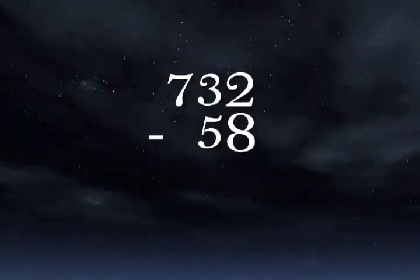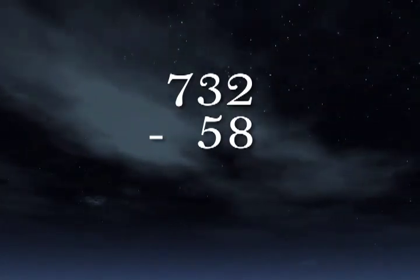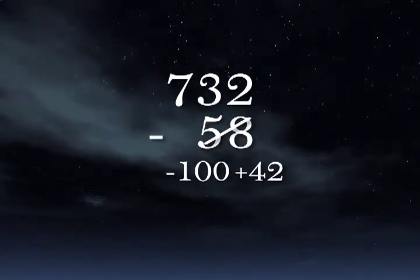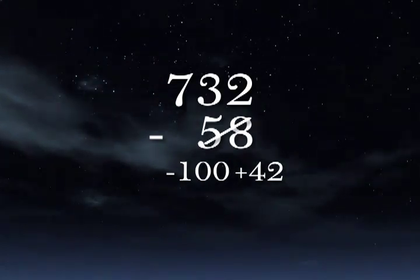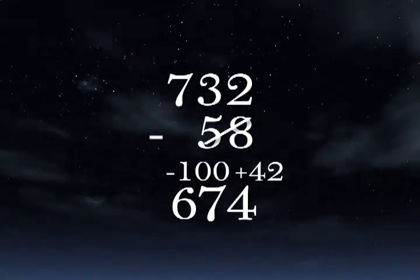Using the method we just discussed, answer this question in under 5 seconds. 732 minus 100 is 632, plus 42 is 674.